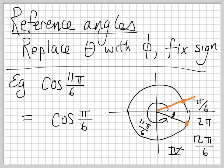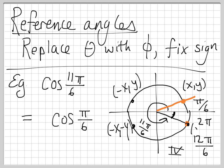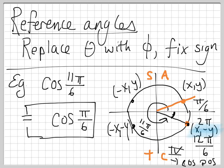Now we have to be careful. Remember, we had (x, y) in quadrant 1, (-x, y) in quadrant 2, (-x, -y) in quadrant 3, and (x, -y) in quadrant 4 — which is the situation we're in. This shouldn't be a surprise. If you remember 'all students take calculus,' down here in quadrant 4 the C means cosine is positive. Since cosine is positive in quadrant 4, we don't actually have to do anything. Cosine of π/6 is positive, and cosine of 11π/6 is positive because 11π/6 is in quadrant 4. So when we replace 11π/6 with π/6, we leave it alone — it's already positive.